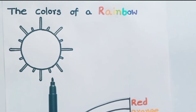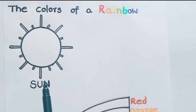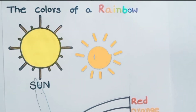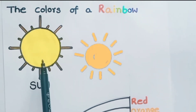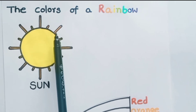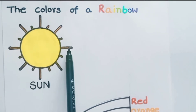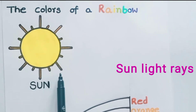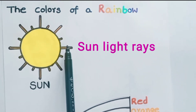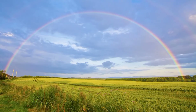Children, tell me what is this picture. Yes, you're right — it is a Sun. Shall we color the Sun? Yes, let us color it. Now the Sun has been colored. What is this color? Yes, you're right — it is yellow. And what are these? These are Sun rays.